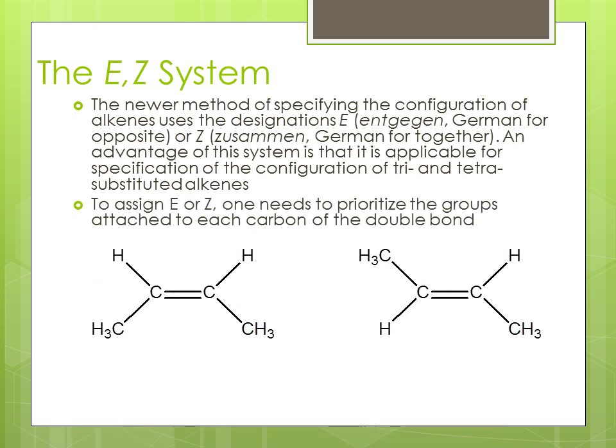To assign E or Z, one needs to prioritize the groups attached to each carbon of the double bond. On the left, there is a Z molecule, and on the right, an E.